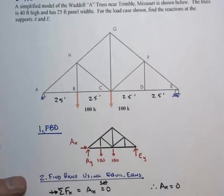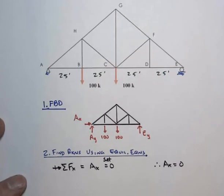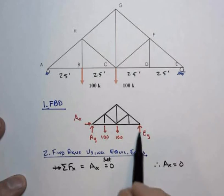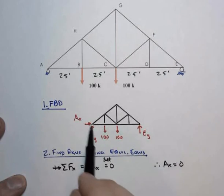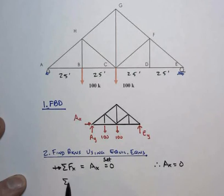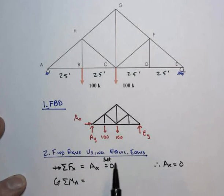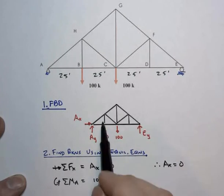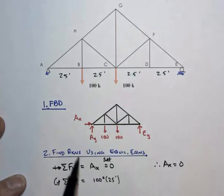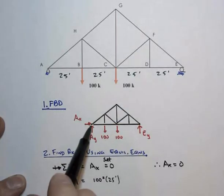Equation number two. Let's write one that we can get another unknown in the equation. Let's go after EY. But we've got these other two reaction components. But if I sum moments about point A, choose counterclockwise as positive, and you'll see why in a moment. I've got to go left to right here. AX and AY pass through point A, so they have a zero moment arm. I'm not going to bother to write them. We've got 100 kips that has a moment arm of 25 with respect to point A.